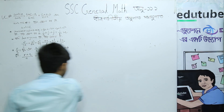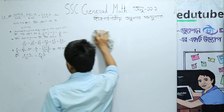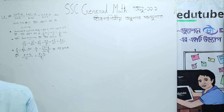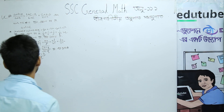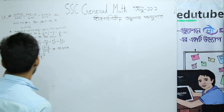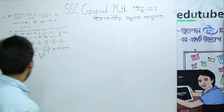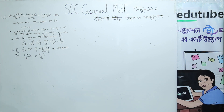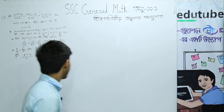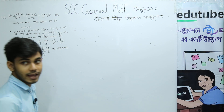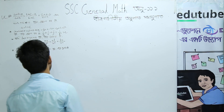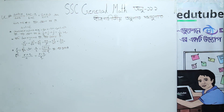Next, if lx equals my equals nz, then prove that x squared by yz plus y squared by zx plus z squared by xy equals mn by l squared plus nl by m squared plus lm by n squared.